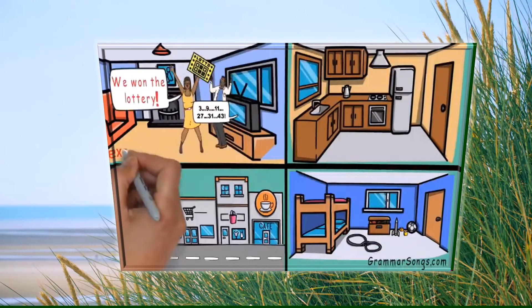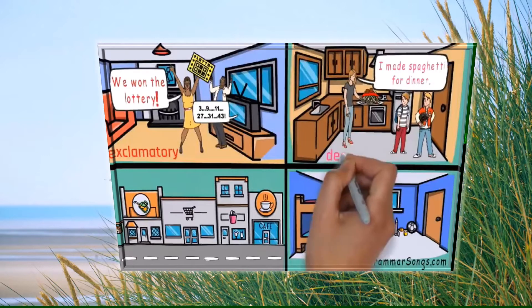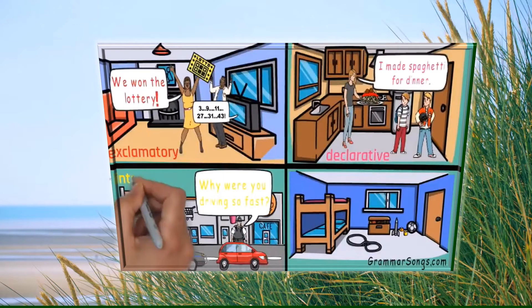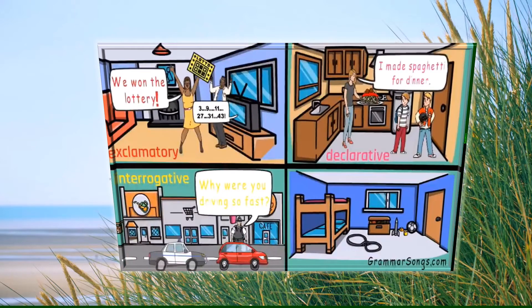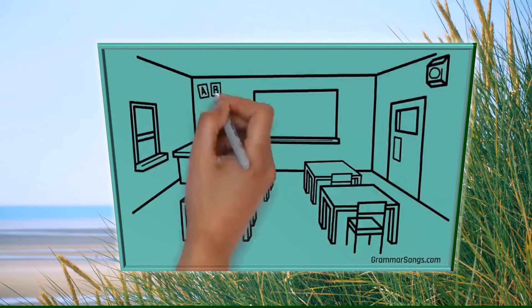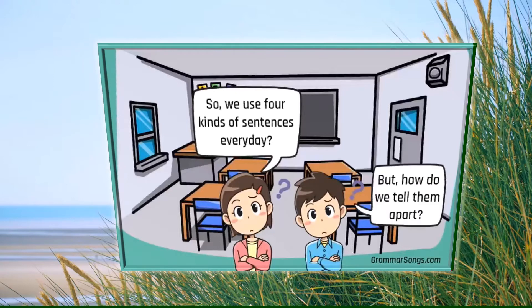We won the lottery! I made spaghetti for dinner. Why were you driving so fast? Clean up this mess! We use four kinds of sentences every day, but how will we tell them apart? Let's look at each type of sentence and see why we use it and what to look for.